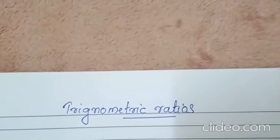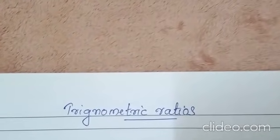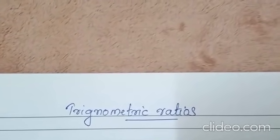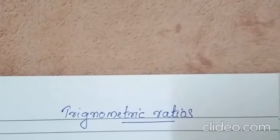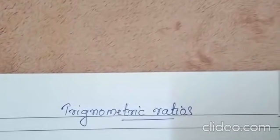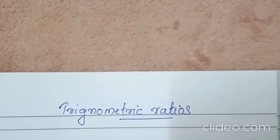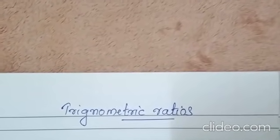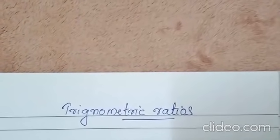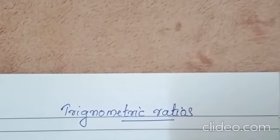Hi children, today we are going to study trigonometric ratios. First of all, you should study the value of each angle — 0 degree, 30 degree, 45 degree, 60 degree, and 90 degree — for sine, cos, tan, cosec, sec, and cot. Then only you can substitute each of the values.